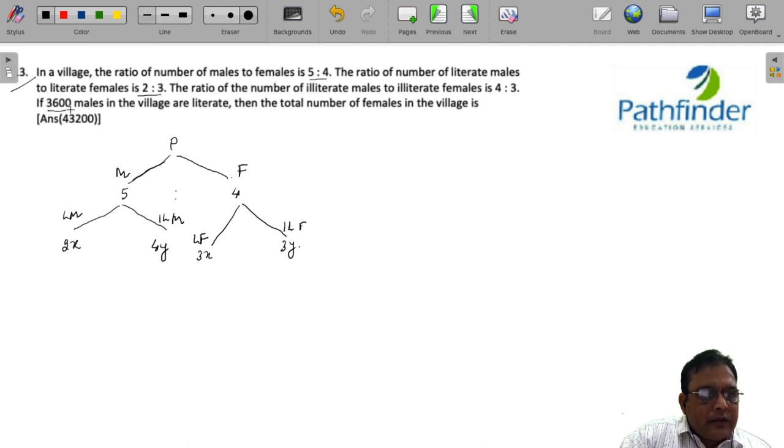The number of literate males is 3600, so the value of 2x is given to be 3600. We are required to find the total number of females in the village. So you have 2x is equal to 3600, so x is equal to 1800, which means the number of literate females is 3x, which is 3 into 1800, which is 5400.